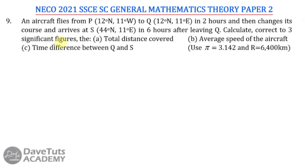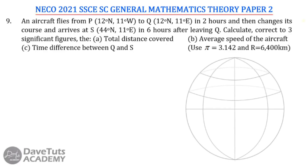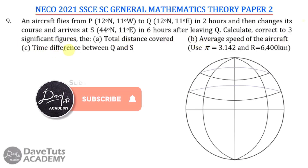In this question on longitude and latitude, we are told that an aircraft flies from point P on latitude 12° North, longitude 11° West, to point Q on latitude 12° North, longitude 11° East, in 2 hours. It then changes course and arrives at point S on latitude 44° North, longitude 11° East, in 6 hours after leaving Q. We are asked to calculate, correct to three significant figures, the total distance covered, the average speed, and the time difference between Q and S.